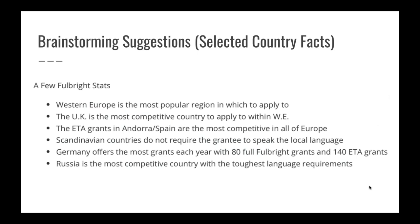Some Fulbright stats: Western Europe is the most popular region, and the UK is the most competitive country there — largely because it's English-speaking. The ETA grants in Spain and Andorra are the most competitive in all of Europe. Germany offers the most grants each year, with 80 Fulbright grants and 140 ETA grants. Russia is the most competitive country with the toughest language requirements.